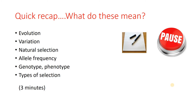Natural selection — we've done a lesson on that and that is the mechanism by which change is going to happen. So mutations, overproduction, selective reproduction and passing on favourable alleles to the next generations. And so that will affect allele frequency over time — those are just the proportion of the alleles for that gene in the population over time.